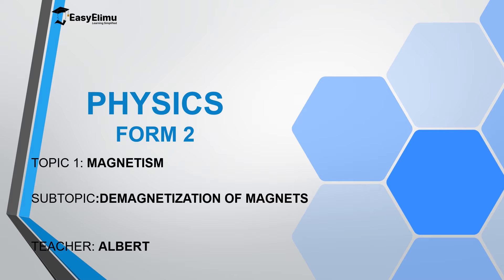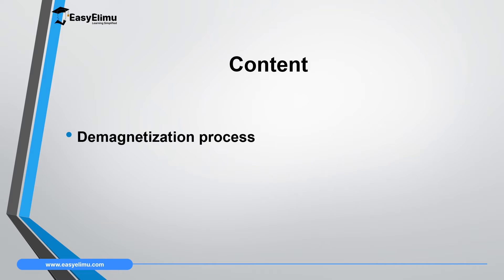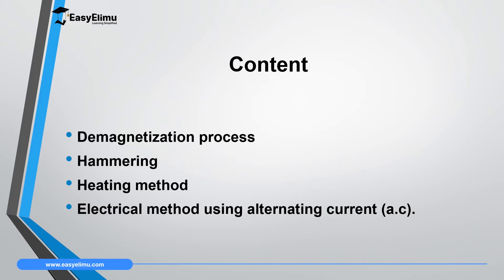In this lesson we are going to look at the methods we can use to demagnetize a material. Demagnetizing a material means changing the dipoles, which are facing in a common axis, to face in different directions in each domain of the magnet. By the end of this lesson you should be able to explain how hammering, heating, and the electrical method using alternating current can demagnetize a material. Remember from Form 1: alternating current can change direction, and we will use this current which changes direction with time to demagnetize a material.